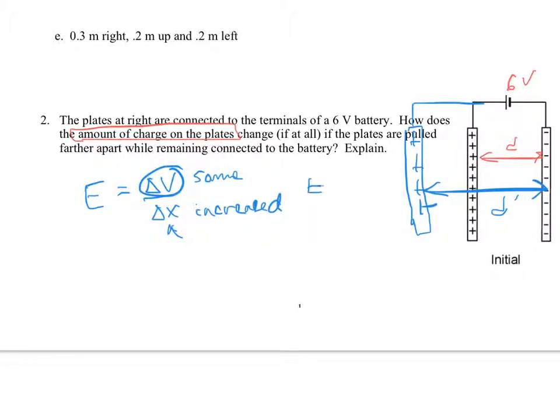So your E field is actually going to be smaller. So the forces exerted on these charges on opposite sides is less. So what happens is the work that you do in separating them, actually some of the charge is pushed back into the battery because there's less attractive force between those two plates. So you end up having less charge on the plates because of the decreased E field and the smaller attraction between the two plates because of the greater distance apart.